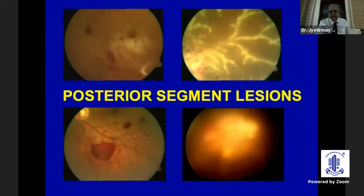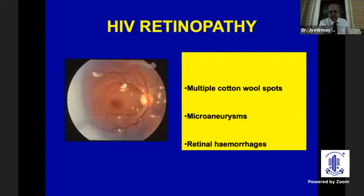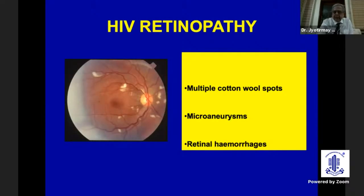Posterior segment lesions are the most common and important because they are vision-threatening. The disease can be benign, like HIV retinopathy, where multiple cotton-wool spots, microaneurysms, and retinal hemorrhages can be seen. Fortunately, these disappear within six to eight weeks.